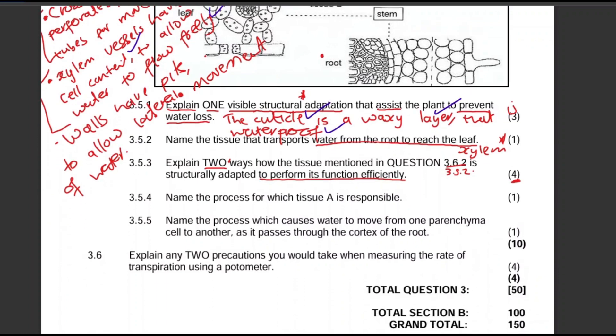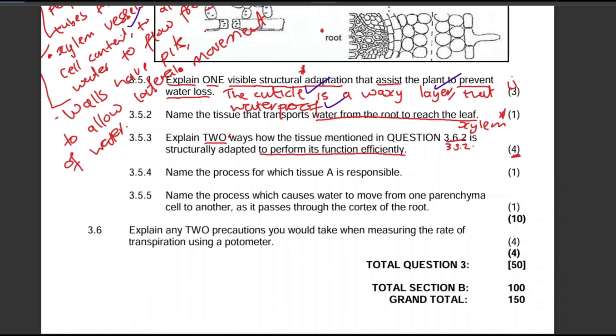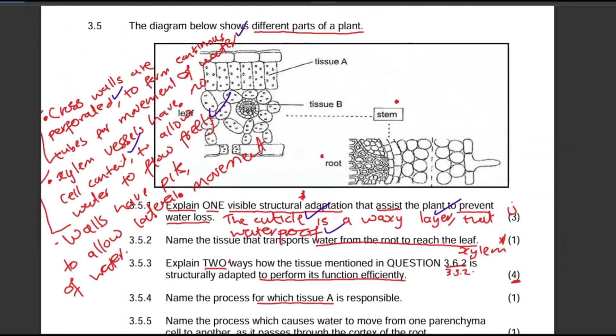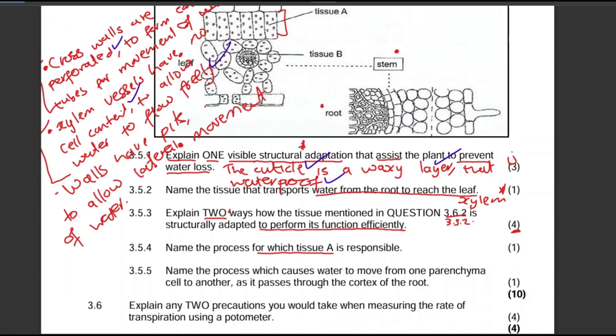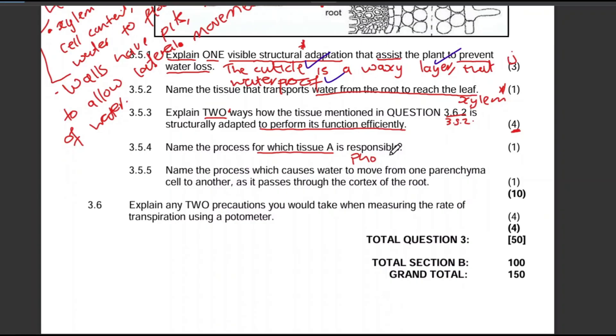Question 3.5.4: Name the process for which tissue A is responsible. Let's look at what tissue A is. There is tissue A over here, so tissue A is responsible for photosynthesis because there's chloroplasts there. Question 3.5.5: Name the process which causes water to move from one parenchyma cell to another as it passes through the cortex of the root.